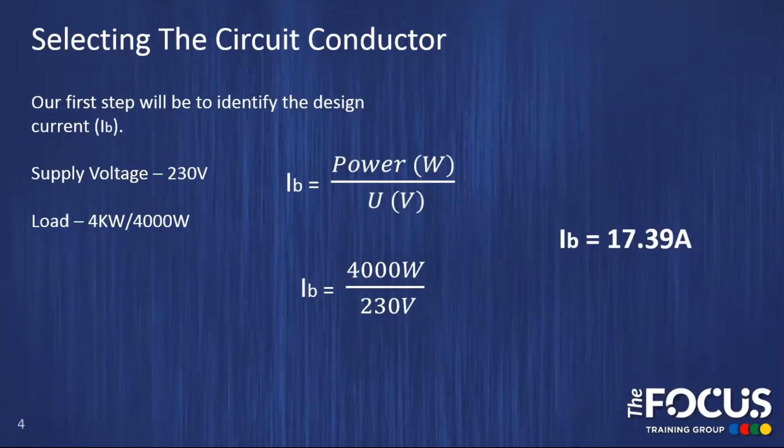So the first step is to identify the design current. We know from our scenario our supply voltage is 230 volts, and our load is 4 kilowatts or 4000 watts. Our design current formula is going to be IB equals power divided by nominal voltage. Remember we have to use the base value: 4000 watts divided by 230 volts, which gives us a design current of 17.39 amps.